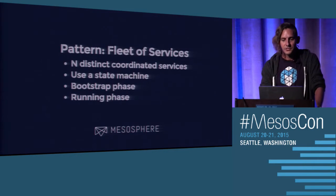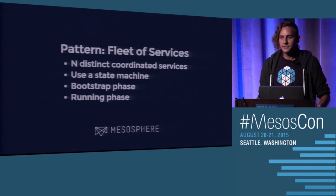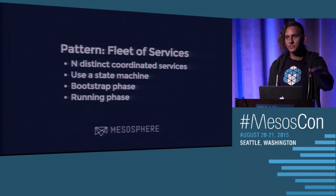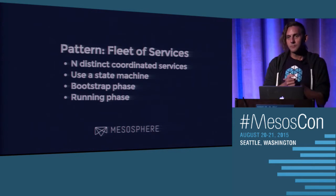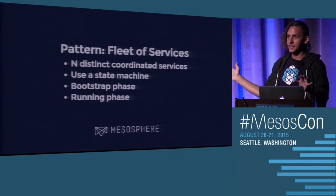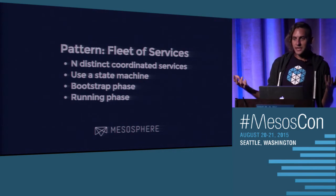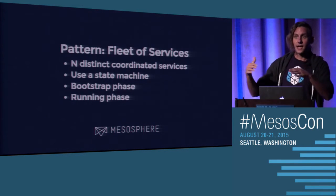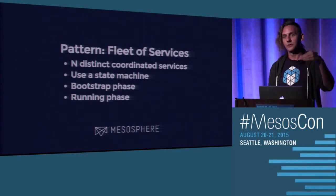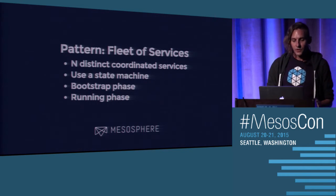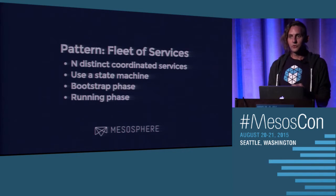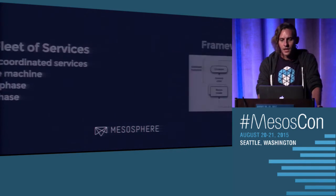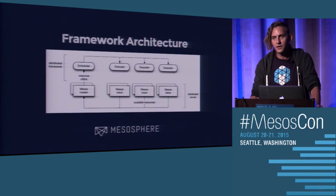A final pattern is a fleet of services. The HDFS framework is one example — you launch journal nodes, wait for them to become healthy, then launch name nodes, perhaps co-located with the journal nodes, wait for them to become healthy, and then spin up all your data nodes. The best way to deal with this is a state machine with different states for each initialization phase. If name nodes or journal nodes die, you go back to a previous state to relaunch and reinitialize them.